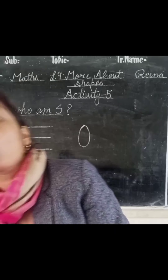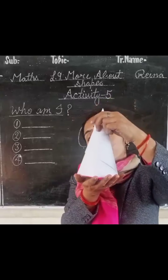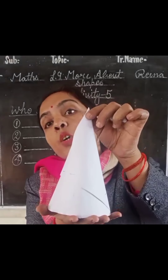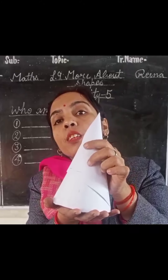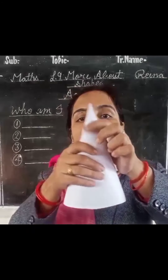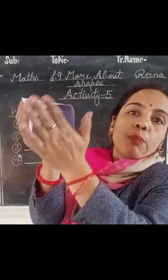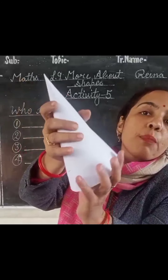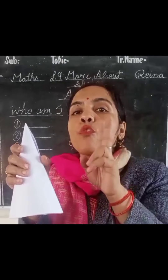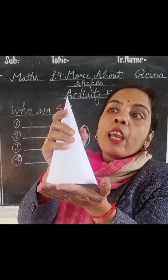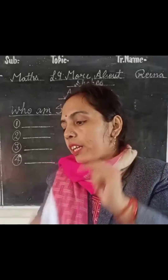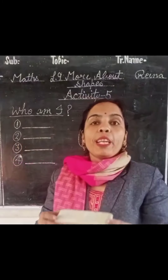Now these are the types of plane shapes. Next you have some solid shapes. Firstly you have the cone. This is a birthday cap and the shape of the birthday cap is a cone. In a cone, how many faces? Two faces — one is a curved face like this round shape, and one is a plane face.